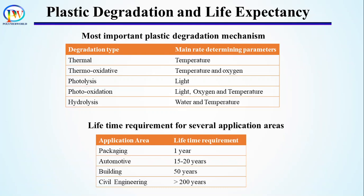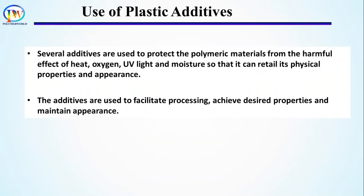Therefore, if polymeric materials are not protected from the harmful effects of heat, UV light, and moisture, they cannot retain their physical properties and appearance and cannot be used for these applications. Several additives are used to protect polymeric materials from the harmful effects of heat, oxidizing agents, UV light, and moisture, in order to retain their physical properties and appearance.